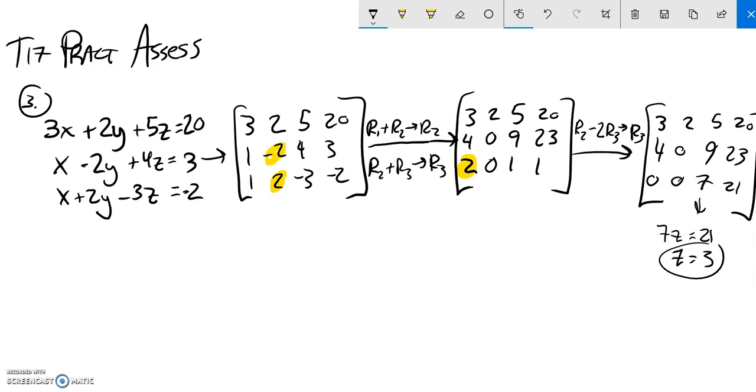And if Z is three, then I can plug it into this equation that says four X, zero Y, plus nine Z. Z is three, equals twenty-three. So four X plus twenty-seven is twenty-three. Subtract that twenty-seven, four X is negative four. So X is negative one. Great.